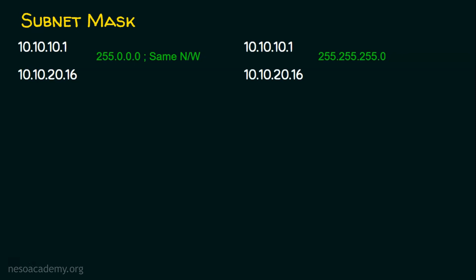Now the IP addresses are 10.10.10.1 and 10.10.20.16, and we are given the class C subnet mask 255.255.255.0. You may ask: can we use a class C subnet mask for class A IP addresses? Yes, we can. But we cannot use a class A subnet mask for class C IP addresses. Remember: for class A, B, or C IP addresses, we can use a class C subnet mask. But for class C, we can't use a class A or class B subnet mask. Similarly, for a class B IP address, we can't use a class A subnet mask.